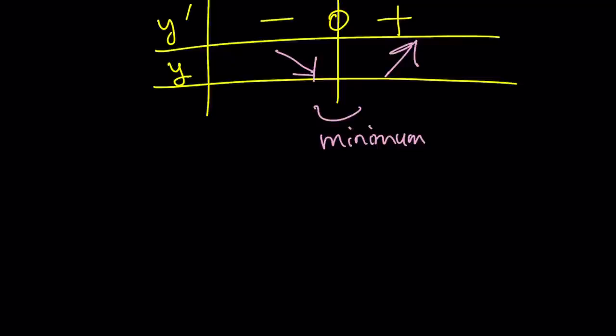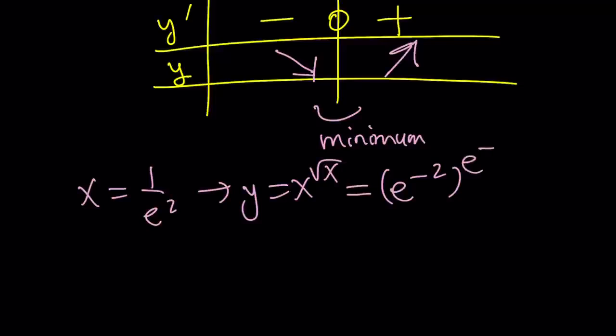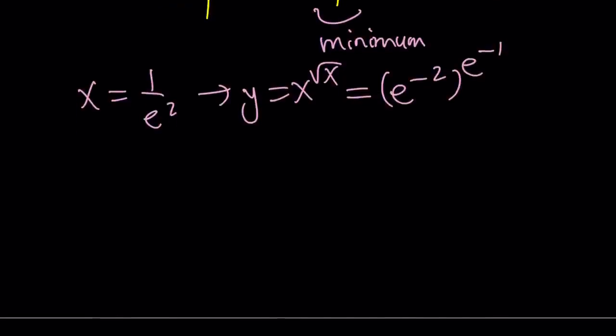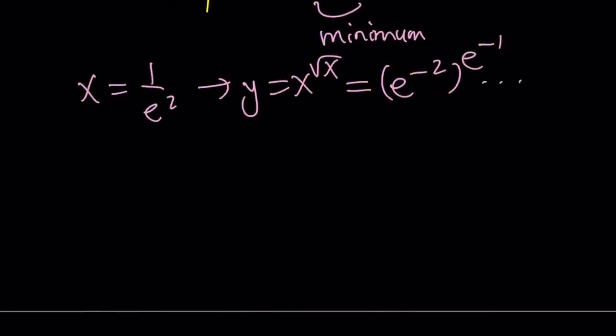And if you want to know what that's going to turn into for the x value, you can just plug in x equals 1 over e squared, and our function is y equals x to the power of square root of x. And from here, y value is going to be e to the power of negative 2 to the power of e to the power of negative 1. And that's just going to be a really interesting number. I didn't evaluate it, so you can kind of look it up. But anyways, it's a positive value, so that's what matters.